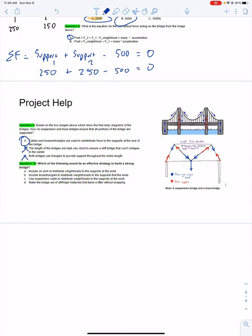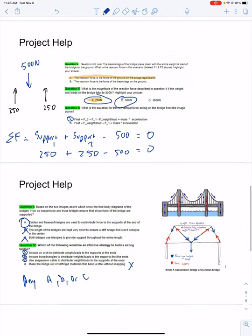Which of the following would be an effective strategy to build a strong bridge? Include an arch to distribute weights, include trusses/triangles to distribute weights, include suspension bridges. Any of the answers A, B, or C would be acceptable, but D we are not going to consider an effective strategy. There are some cons to having super rigid materials. If they're too inflexible, they could snap, so D would not be correct, but A, B, and C would be fine.